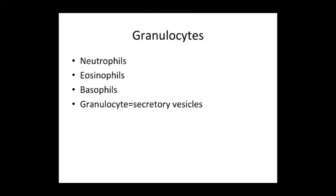Let's start our discussion about granulocytes. Granulocytes are your white blood cells that contain granules, which are essentially secretory vesicles. You have three types: neutrophils, eosinophils, and basophils. Neutrophils get a neutral color with standard staining. Eosinophils prefer acidic dyes and therefore get a bright red or pinkish color. Basophils prefer basic dyes and therefore give a blue or purple color.